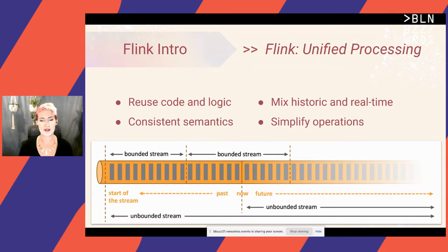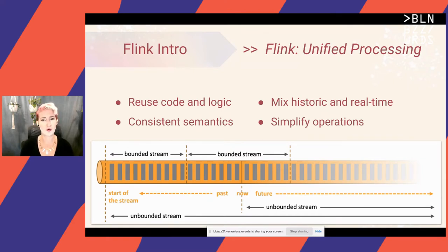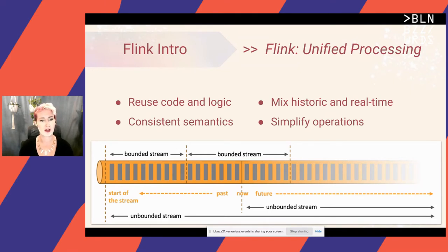Why is it important to have and provide this unified batch and streaming solution? Unifying this allows users to reuse code and logic across both batch and streaming processing, making it easier to integrate different applications and different systems. It also helps ensure that semantics are going to be consistent, so you don't have to learn a totally new API for each processing mode or for each layer of abstraction. It means you can simplify your operations and keep your configs and processes the same across all these different systems. And of course, it enables you to mix your historical and your real-time data.